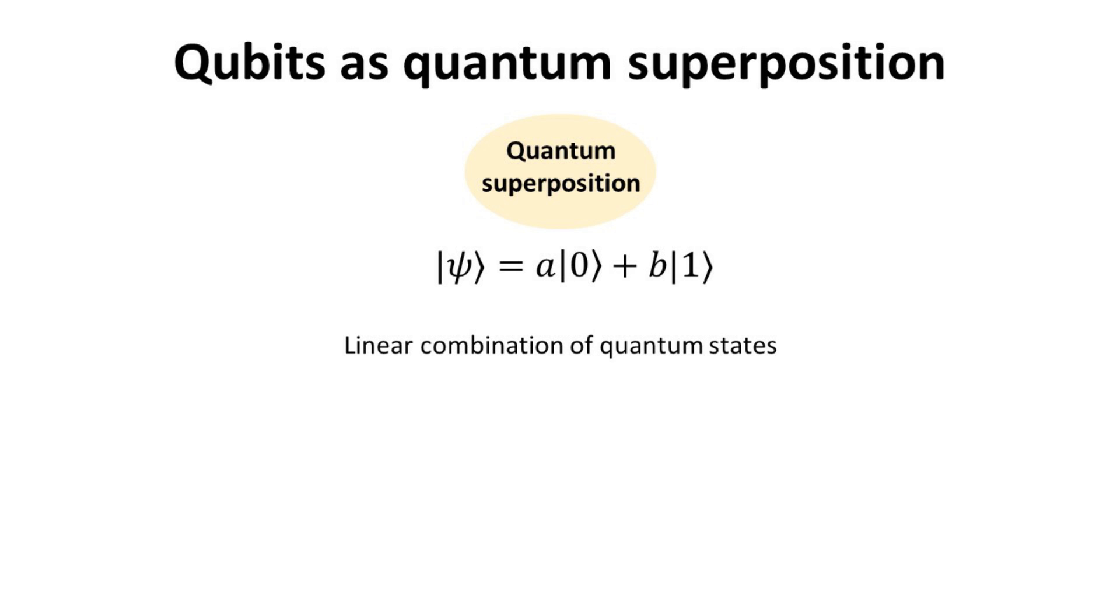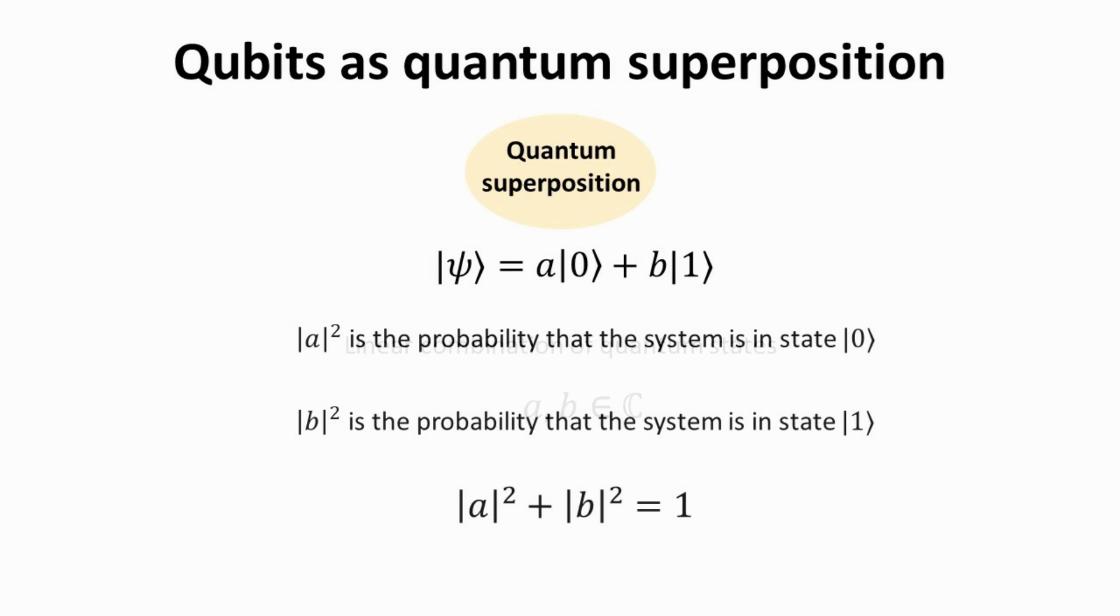A general qubit state is represented by the ket psi as follows, where psi is a linear combination of ket0 and ket1. The numbers A and B are complex valued. The square of the modulus of A and B yields us the probabilities that the system will be in the state ket0 or ket1 respectively. Since they are probabilities, they have to add up to 1, which is also known as the normalization condition.